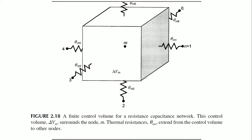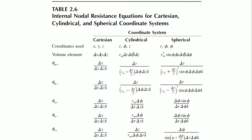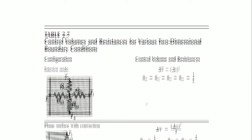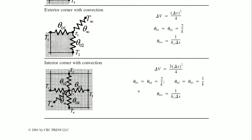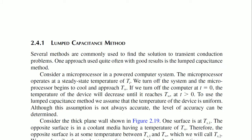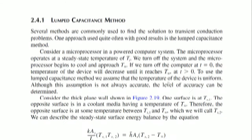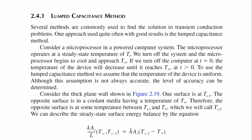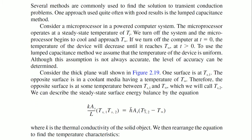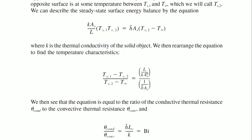We have a huge amount of calculations that are possible — nodal resistance equations in cylindrical and spherical coordinate systems. It is very much possible to evaluate interior corners and similar configurations. The lumped capacitance problem: consider a microprocessor in a powered computer system operating at steady state temperature. We turn off the system and the microprocessor begins to cool — how the temperature decreases and so on can all be evaluated.